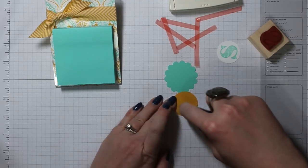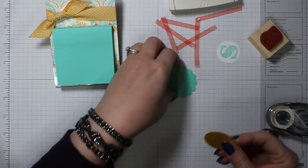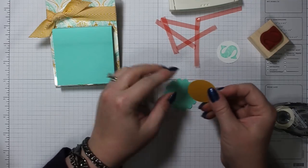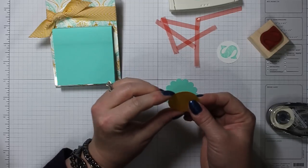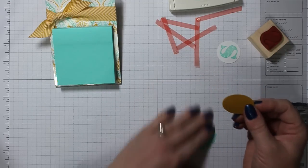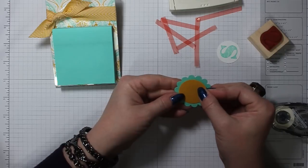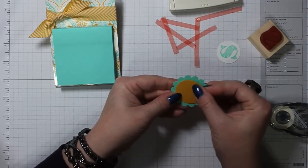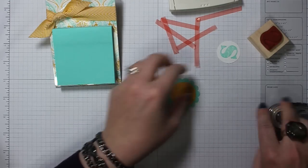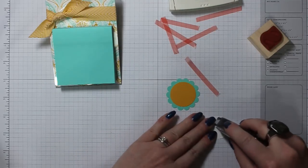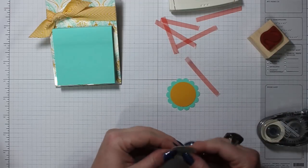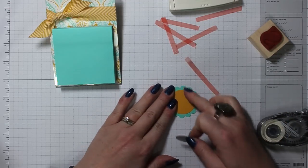All right, and again, I used Coastal Cabana and Crushed Curry cardstock here. And then I'm just going to stick these together. Snail, you could also use the multipurpose glue, doesn't matter. If you want some extra dimension, you can use dimensionals under all this. There's a little notch right there. There we go, just kind of smoothed it under with my fingernail. And then get that in the center. Sometimes I use, I like using the multipurpose liquid glue for that because it does give you a little bit of time to slide it around.